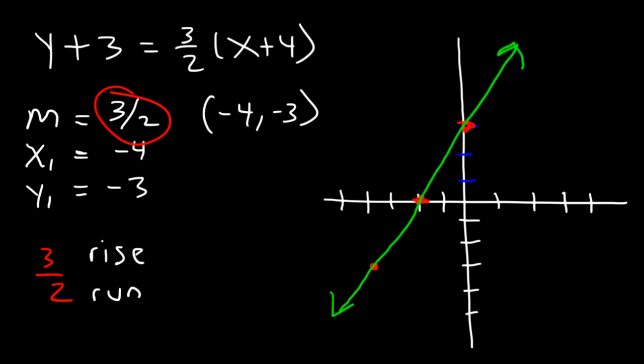So now you know how to graph a linear equation in point slope form. So all you need to do is find the x and y values of the point, the first point that you need to plot, and then use the slope to get the next point. All you need is two points. If you have two points, you can draw a straight line. If you want a third point, that's fine too. But you just need two points at minimum to graph a straight line.